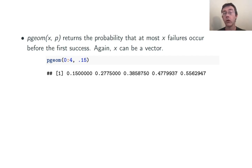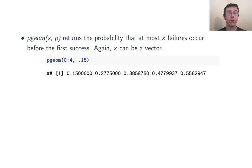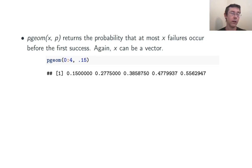pgeom is the cumulative distribution function. It returns the probability of getting at most x failures before the first success. For example, this gives you the probability of getting zero through four failures before that first success. Here, the probability of success on an individual trial is 0.15.